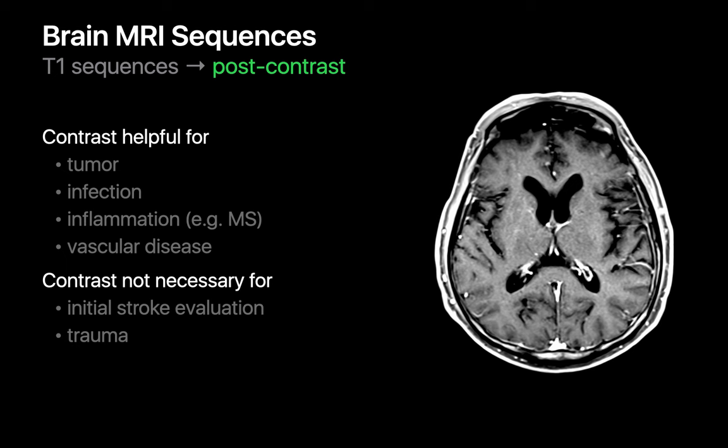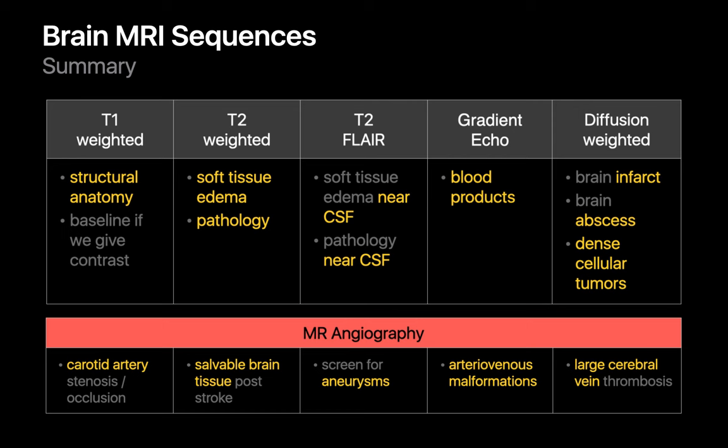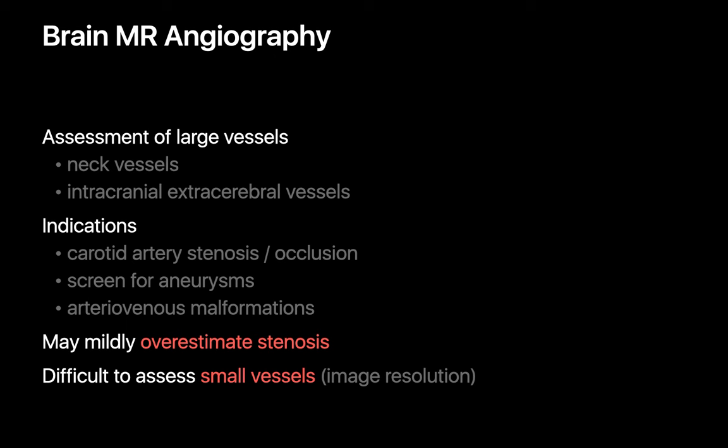Contrast usually does not offer much additional help, however, in the sort of problems we're looking for in acute stroke and trauma patients. There is one special group of MRI sequences in addition to the five we've talked about so far, and those are our MR angiography sequences. MR angiography permits us to assess the patency of larger arteries, and common indications for its use are to assess carotid artery patency, to screen for aneurysms, and to assess some AVMs.